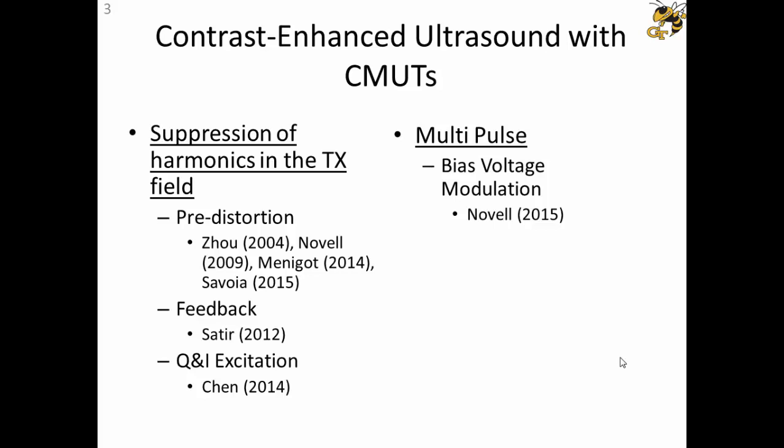The first approach is to drive the CMUT in such a way that in the transmitted field, the harmonics are suppressed so it works as a linear transducer. Pre-distortion methods have been studied extensively. These methods require very accurate calibration of the transducer and complex driving signals. In a previous effort, we proposed that by utilizing a feedback structure employing a series impedance, the harmonic content can be suppressed at the expense of transmit sensitivity.